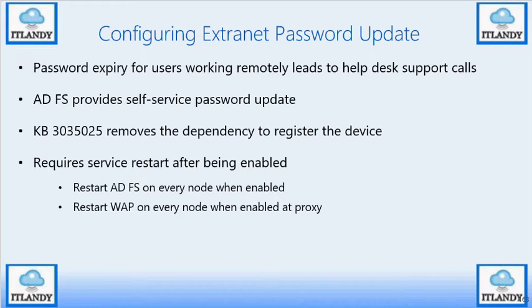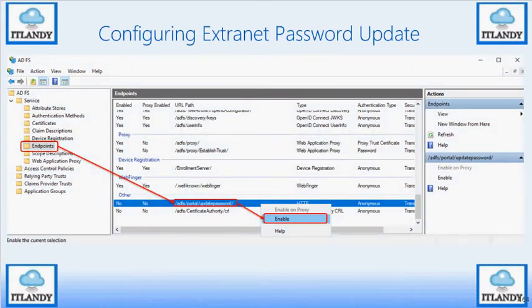Here is how it looks. You can see the endpoint — click on the ADFS portal, then 'Update Password' and enable it. It's as simple as that. This is where you can see all the endpoints for your ADFS, including enrollment, keys discovery, web, ID, and CTR.